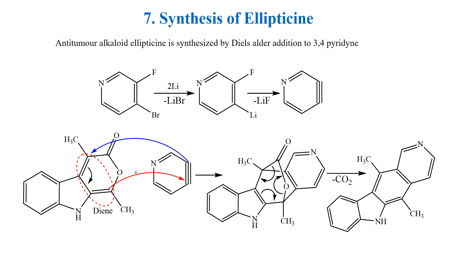Ellipticene is another alkaloid which can be prepared by the use of benzyne. It is an anti-tumor alkaloid, prepared by a Diels-Alder reaction between alpha-pyrone, which acts as the diene, and 3,4-pyridyne, which acts as the dienophile.